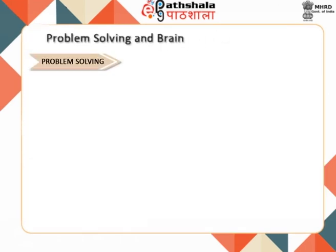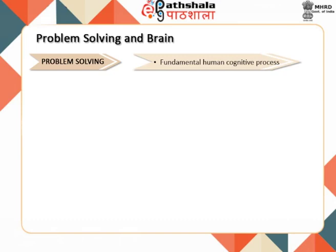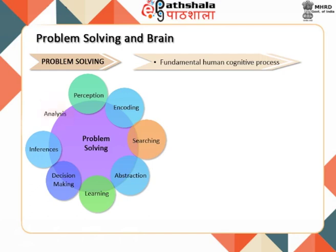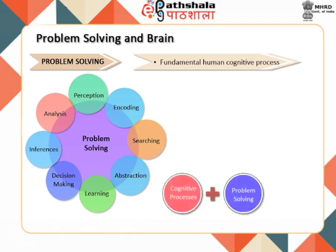Problem solving is one of the fundamental human cognitive processes. As a higher cognitive process, it interacts with perception, encoding, searching, abstraction, learning, decision making, inferences, and analysis based on internal knowledge representation. All these cognitive processes are a function of the brain. The brain searches for a solution and finds a path. Research on the brain and problem solving claims that different parts of the brain are involved in problem solving.